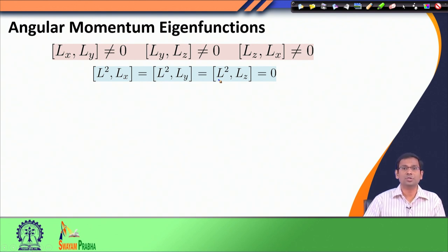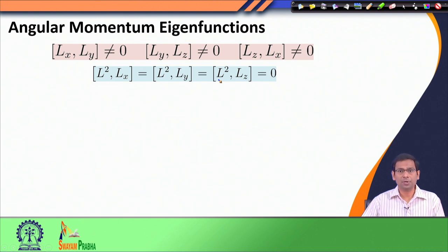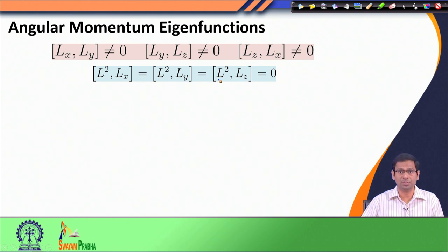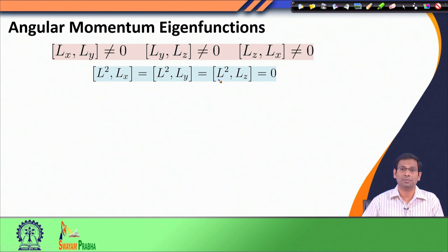These commutation relations are quite important in discussing the properties of angular momentum operators and their eigenfunctions and eigenvalues. We know that when two operators commute with each other, they have a common complete set of eigenfunctions if these two operators are Hermitian operators. But if two Hermitian operators do not commute with each other, we cannot simultaneously observe the outcome of an experiment when we try to measure both these operators, and the precise determination of their eigenvalues is forbidden by the uncertainty principle.